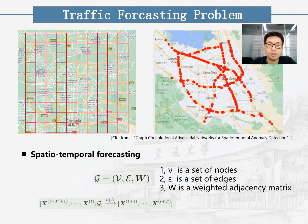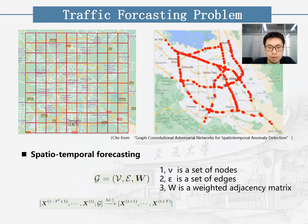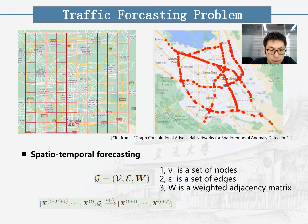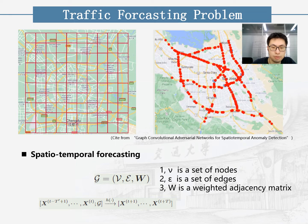Let me briefly introduce our task: the traffic forecasting problem, that is, spatial-temporal forecasting. The goal of traffic forecasting is to predict the future traffic speed given previously observed traffic flow from uncorrelated sensors on the road network. We can represent the sensor network as a weighted directed graph G, where N is the set of nodes, epsilon is the set of edges, and W is the weighted adjacency matrix. The traffic forecasting problem aims to learn a function that maps T' historical graph signals to future T graph signals.